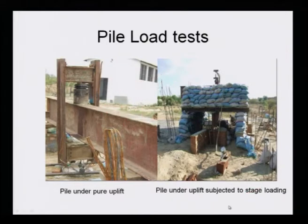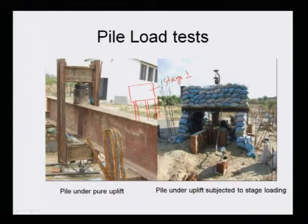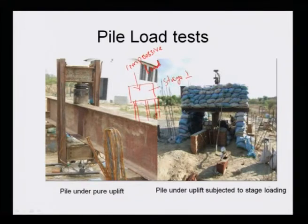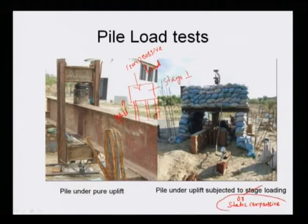Suppose one-third of construction has been made in stage one. The pile will be acted upon by compressive load. If there is an earthquake or wind load during this stage, the pile will try to come out — meaning there will be uplift. So we study the uplift capacity of a pile in the presence of static compressive loading — how it behaves.